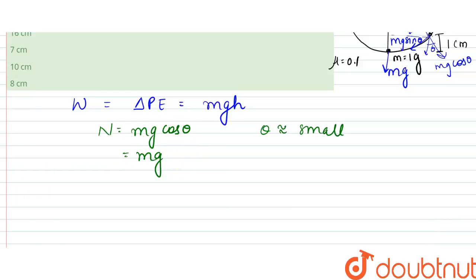So the frictional force would be equal to mu times N, so that would be equal to mu mg.